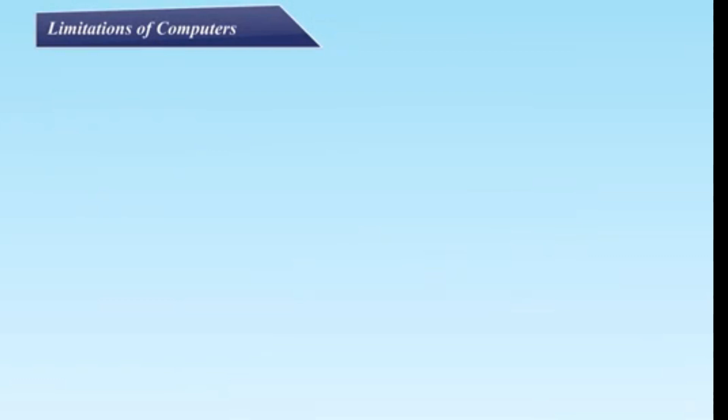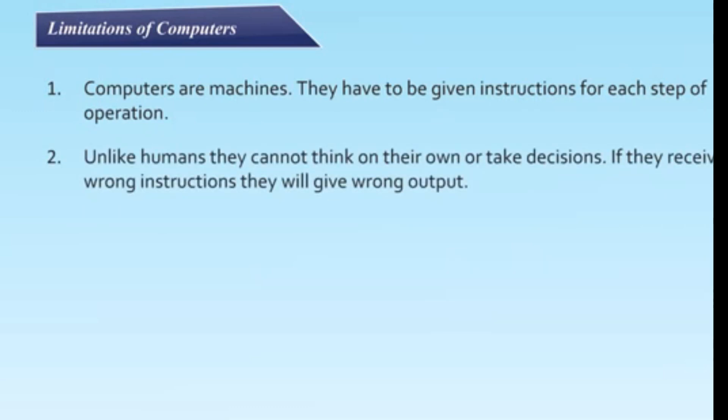Limitations of computers. Computers are machines. They have to be given instructions for each step of operation. Unlike humans, they cannot think on their own or take decisions. If they receive wrong instructions, they will give wrong output. Unlike humans, computers are not creative. They simply follow instructions.